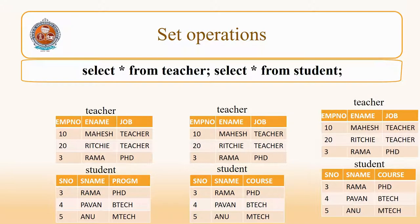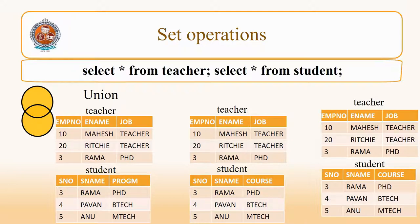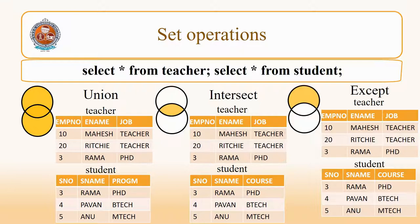Let us see the different set operations. First of all, union — the union gives you the results of set1 and also set2. And the intersection operation gives you the common elements in set1 and set2. And then the except operator will give you the elements that are in set1, but not in set2.